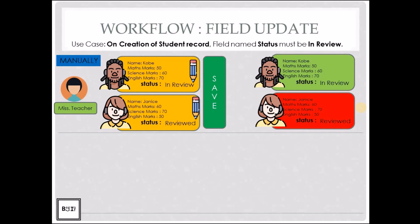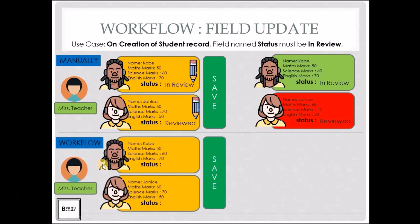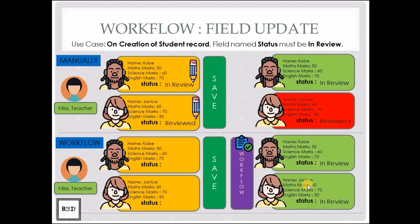Let's take the same example, but this time an administrator has created a workflow. Ms. Teacher, when she creates the records, does not populate the status field and clicks save. This fires a workflow rule with an 'on create' criteria, and when the records get saved into the system, the workflow automatically populates the field with the value 'in review'. This allows the teacher to only populate the fields relevant to her, while the workflow takes care of the internal processes.